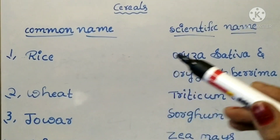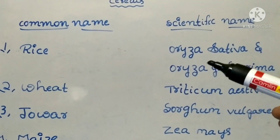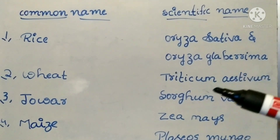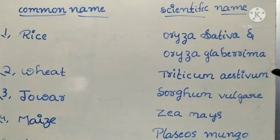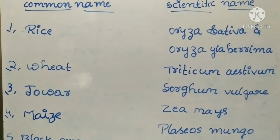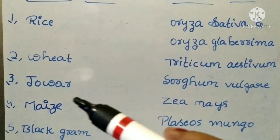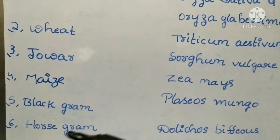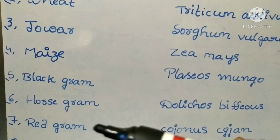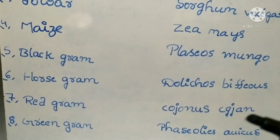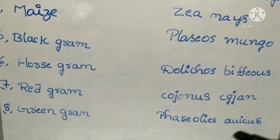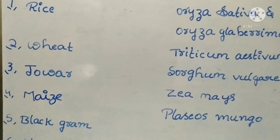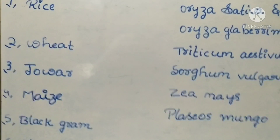Next, let us talk about cereals. Rice — the scientific name is Oryza sativa and Oryza glaberrima. There are two names: Oryza sativa and Oryza glaberrima. These are very important for CHSL exams. Jowar — Sorghum vulgare. Maize — Zea mays. Black gram — Phaseolus mungo. Horse gram — Dolichos biflorus. Red gram — Cajanus cajan. Green gram — Phaseolus aureus. These are very important friends — black gram, red gram, wheat, maize, rice. If scientific names are asked in exams, this is very important.